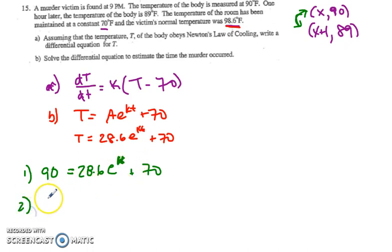Actually, I'm not plugging in time equals 1. I'm just plugging in time equals x. So that should be kx right there. My second equation is 89 equals 28.6e^(k(x+1)) plus 70.